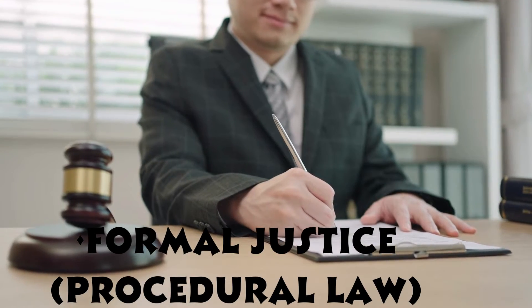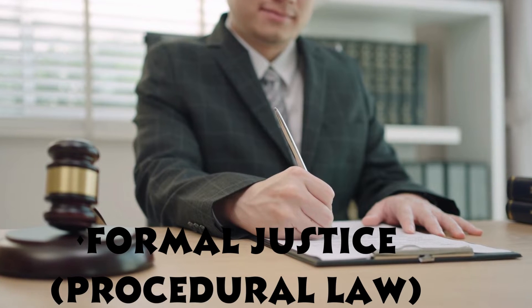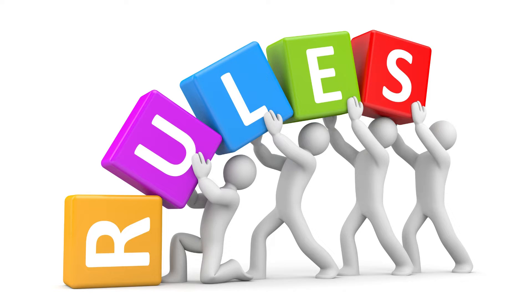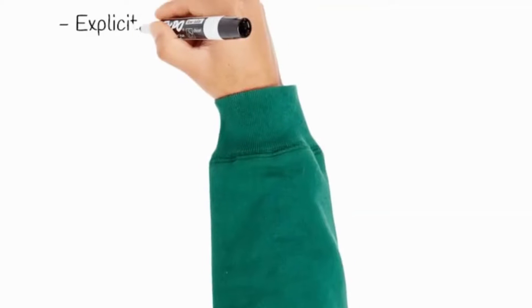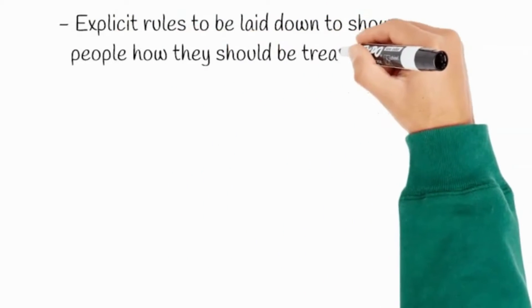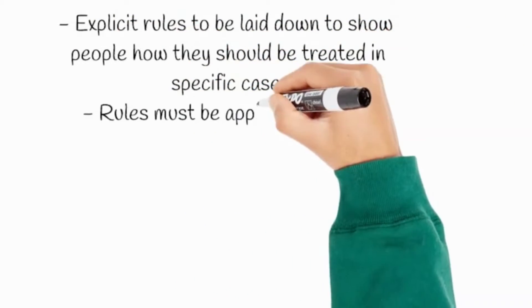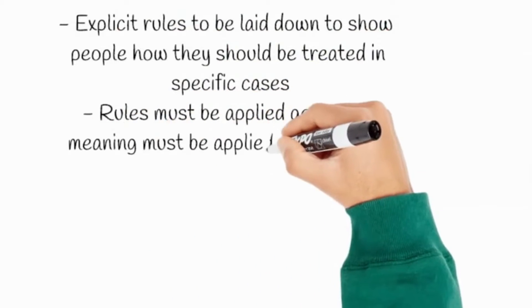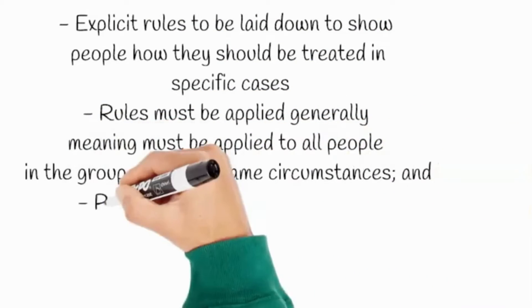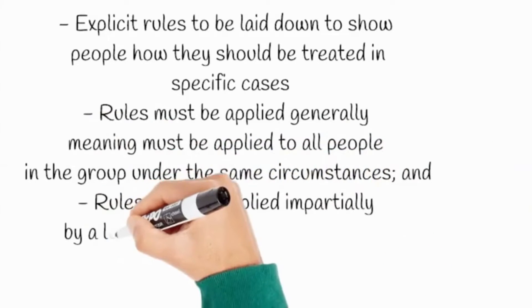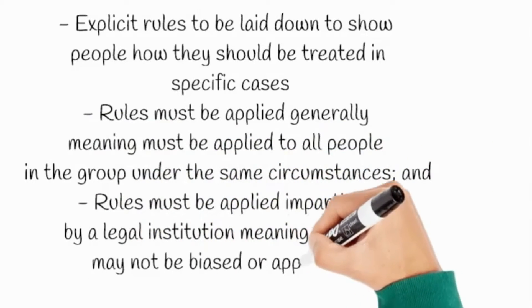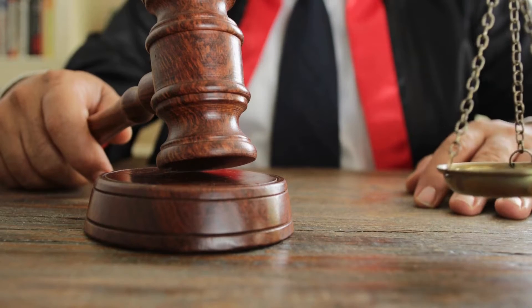Formal law needs the following to achieve formal justice. Explicit rules must be established to show people how they should be treated in specific situations. Rules must be applied generally, meaning they must apply to everyone in the group under the same circumstances. Rules must also be applied impartially by a legal institution, meaning the judge cannot be biased or apply rules unequally.